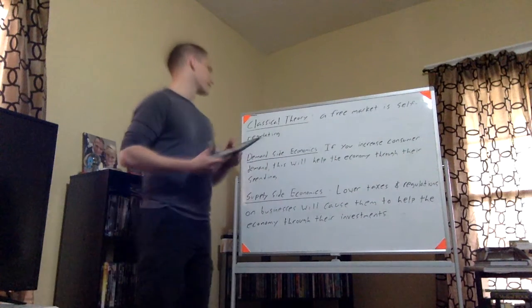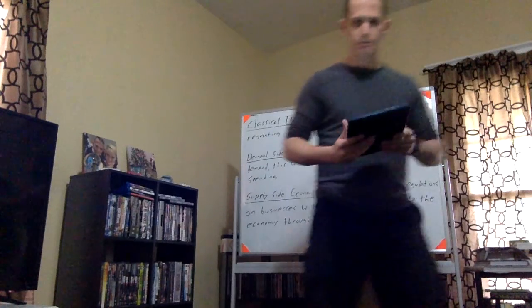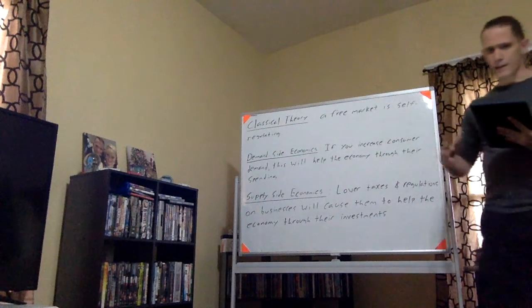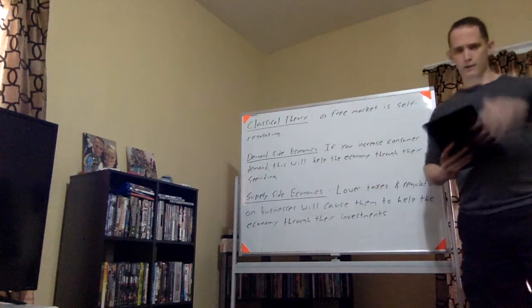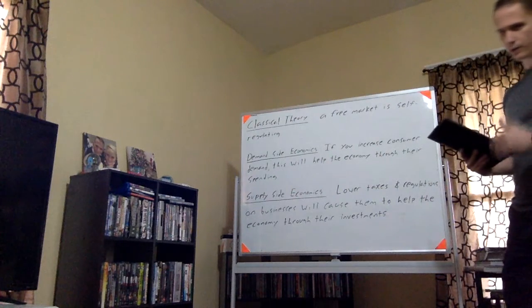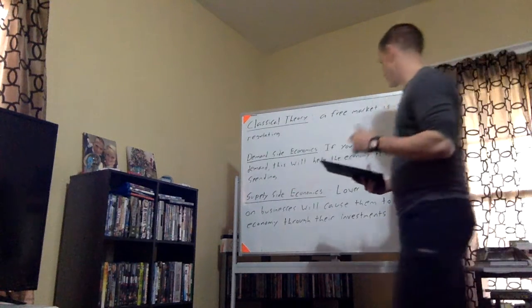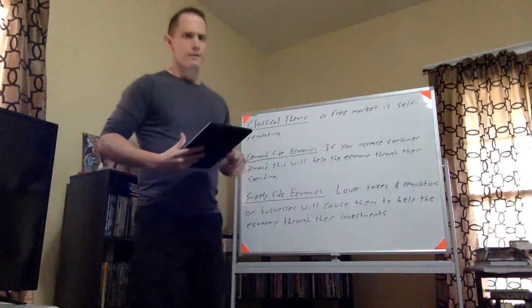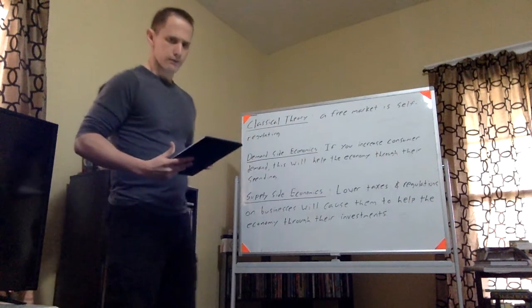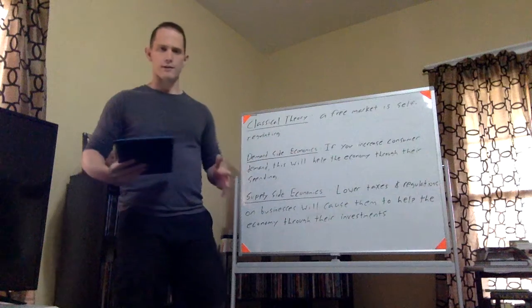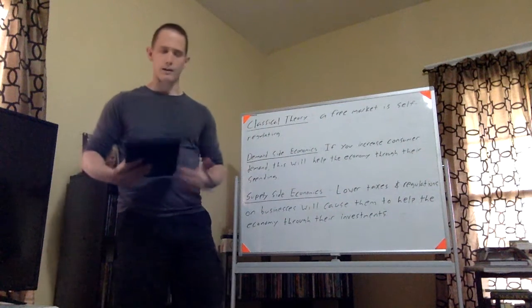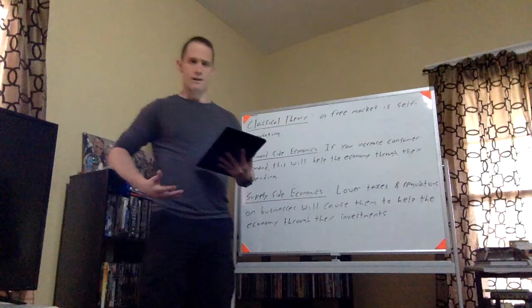So, the first one we're going to discuss is something called classical theory. And, once again, these are not all-encompassing definitions. It's kind of giving you a straightforward idea of what they're talking about. So, classical theory. This idea that the market is self-regulating. So, this idea that, hey, nobody should have to step in and intervene at any point in time. The government should have to step in. It will eventually fix itself.